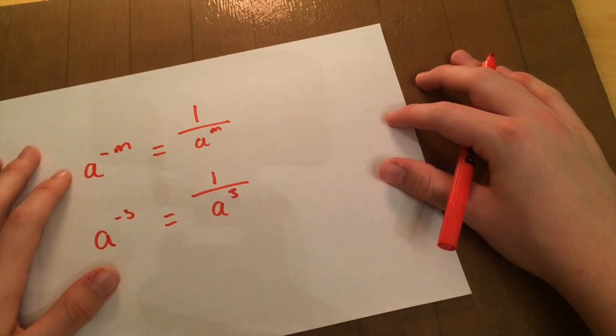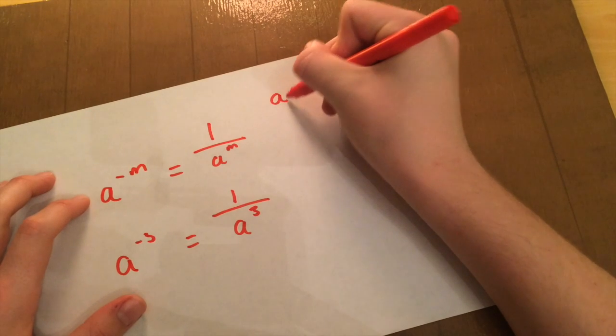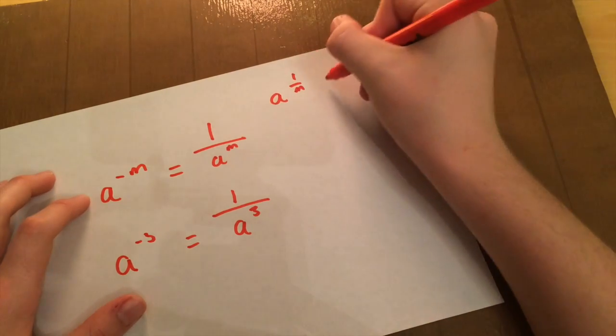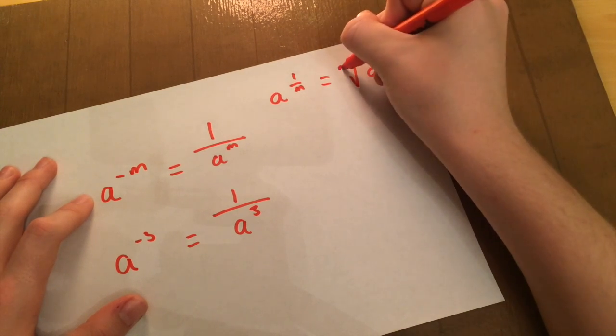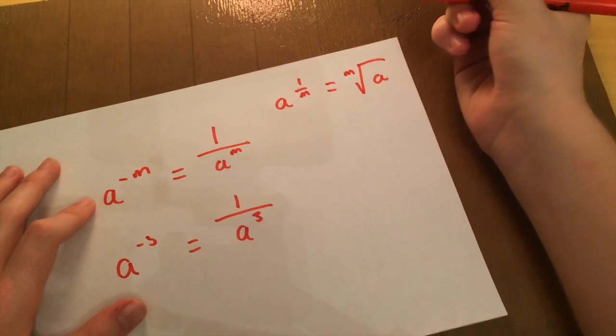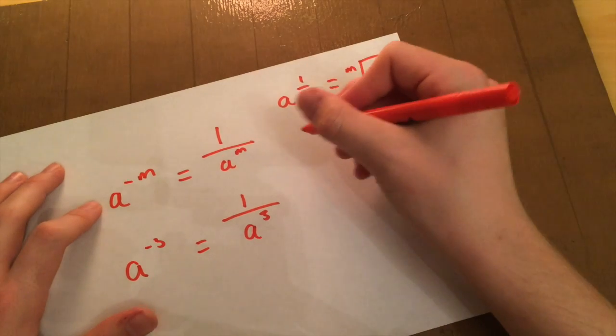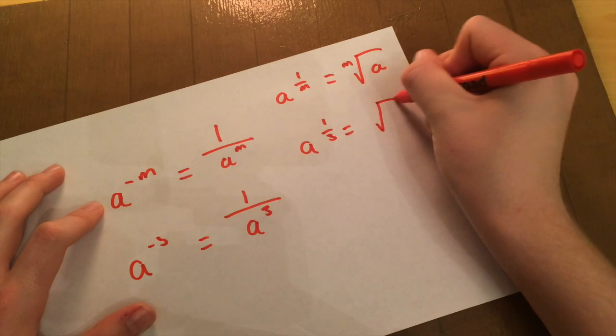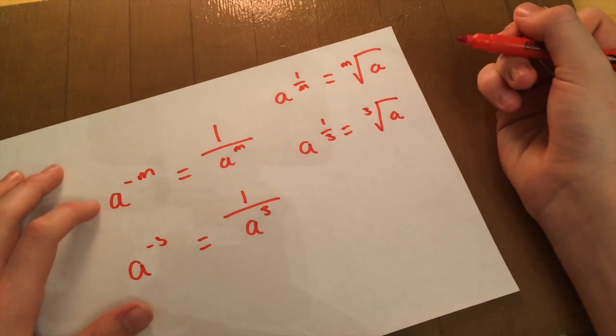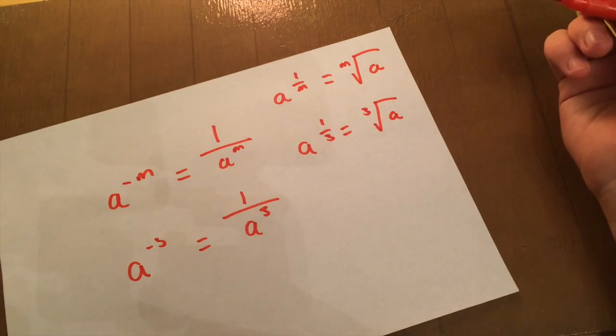Alright, next we have the A to the 1 over M. That equals root A M outside. So that could mean square root, cube root, whatever. So if we do A 1 over 3, that would give us root A to the 3. So that's the same as saying cube root of A.